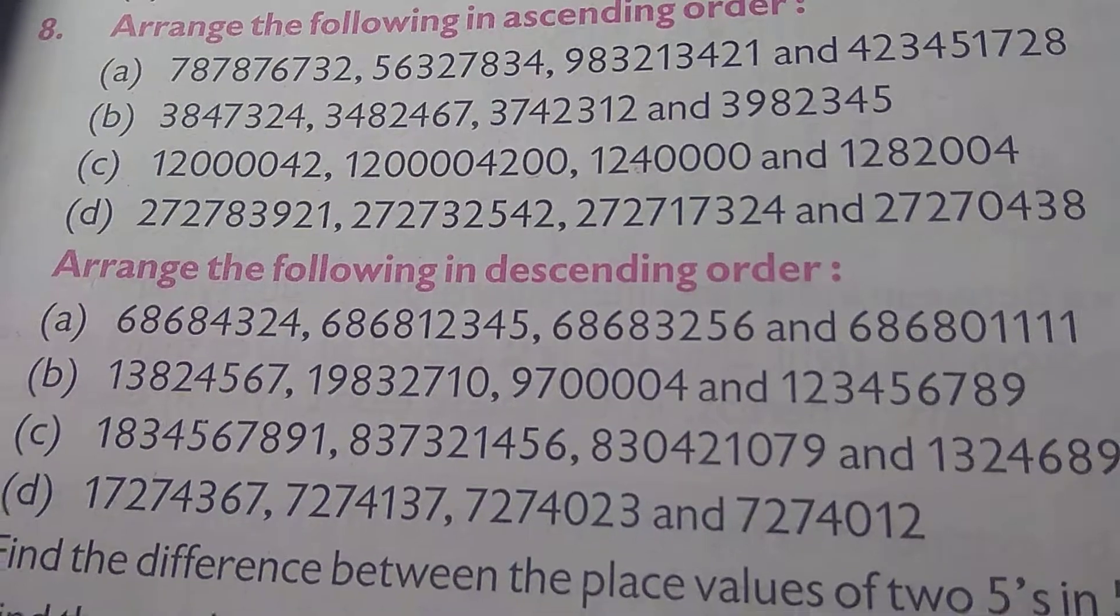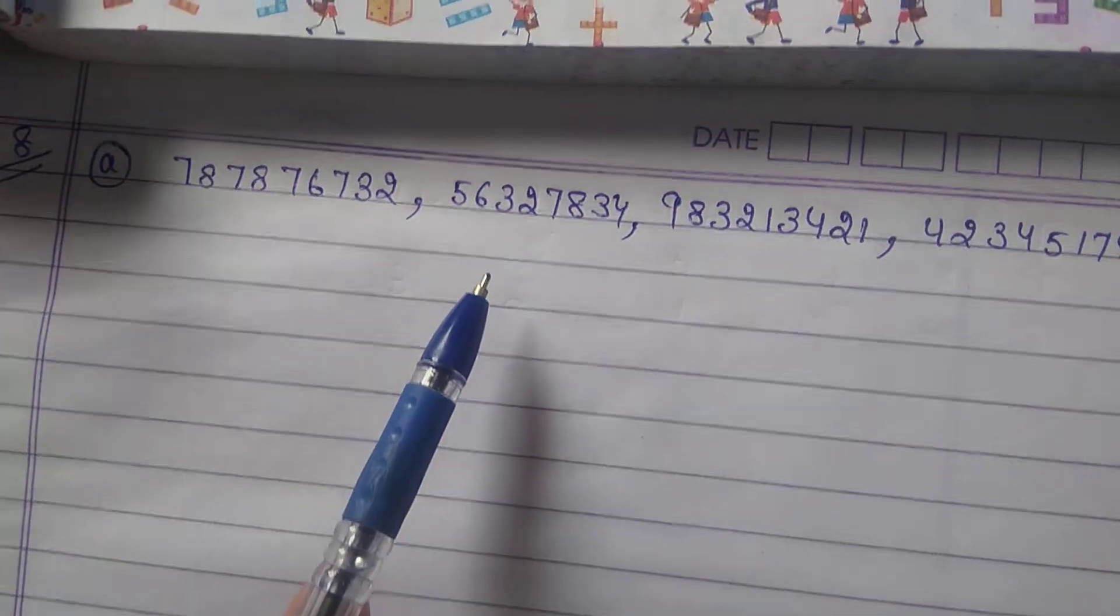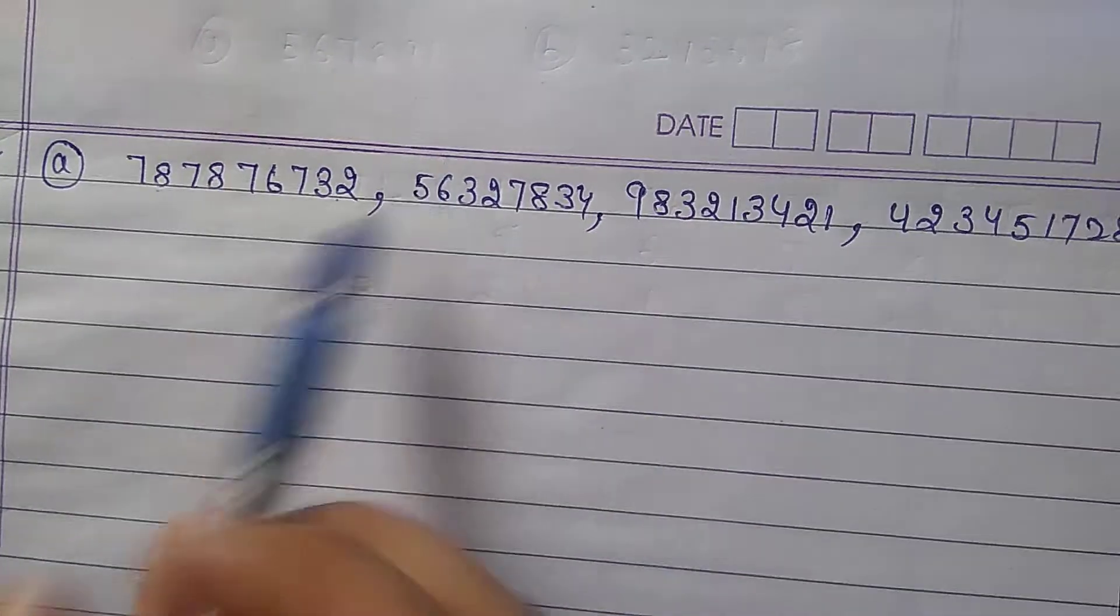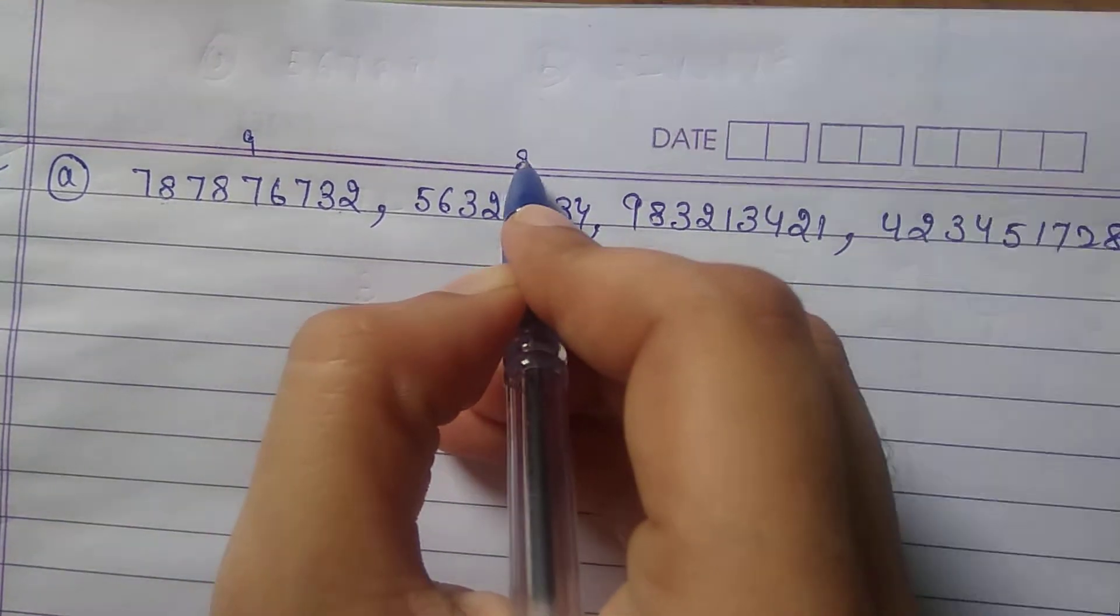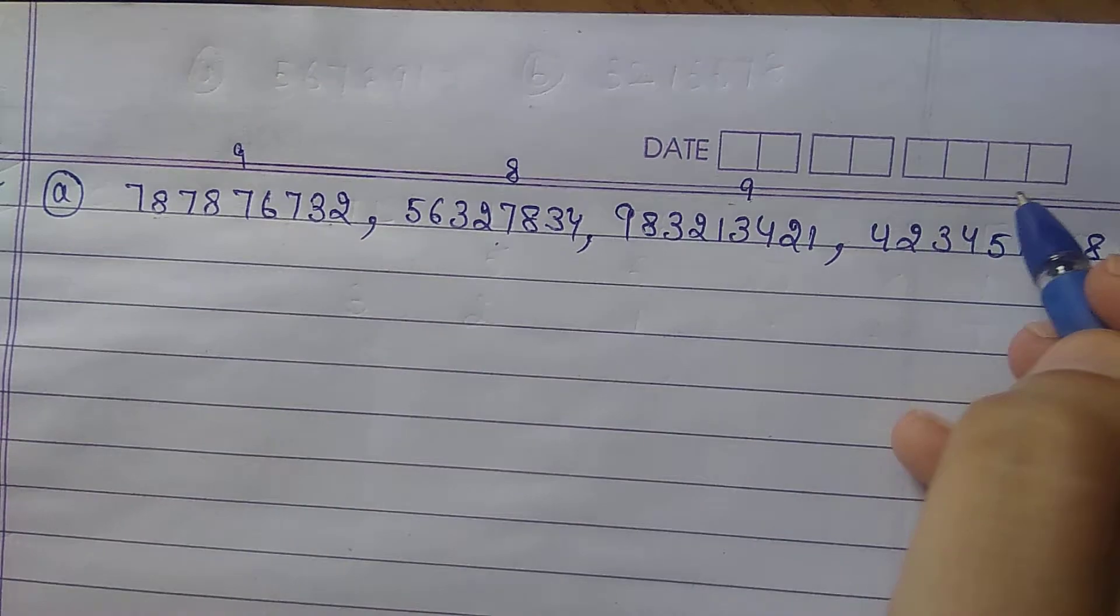So, part A is this. First of all, we will count the given digits. This numeral contains 9 digits. This contains 8 digits. This also contains 9 digits, and 9.